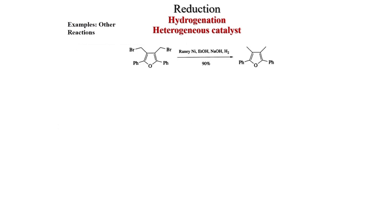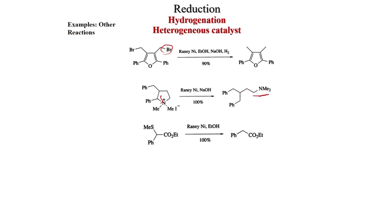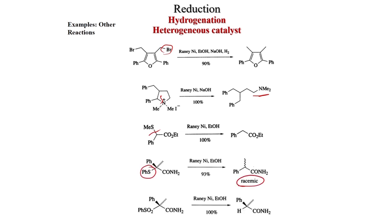Conversion of ketones to alkanes is possible via Raney nickel: first form the thioketal with BF3 and dithiane, then Raney nickel gives the desulfurized product — cyclohexane in this case. Another example: Raney nickel removes the thioketal moiety via desulfurization of both C-S bonds to give a lactam. More examples: CH2Br is converted to a methyl group with Raney nickel; here a C-S bond is cleaved to give an amine; in another case a C-S bond is cleaved with Raney nickel in ethanol, and interestingly when the bond is cleaved it becomes racemic. However, if a sulfonate to S-phenyl conversion is done, you get a chiral product.